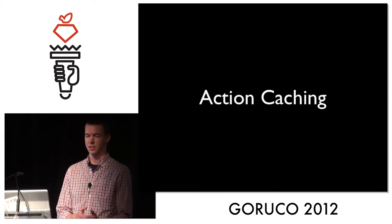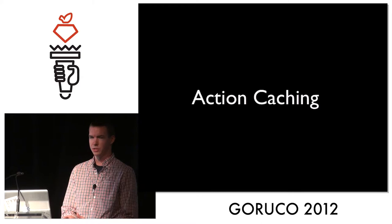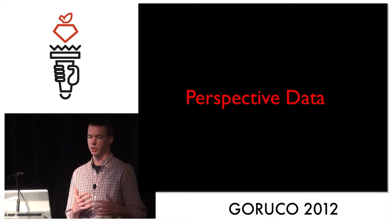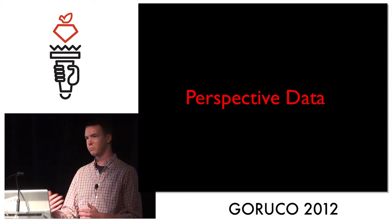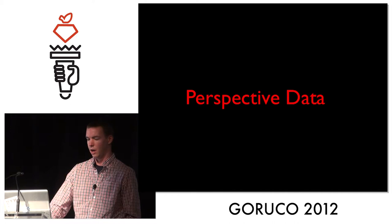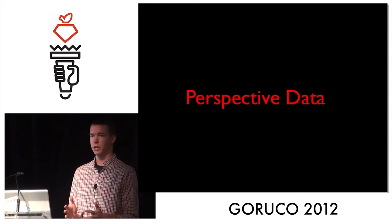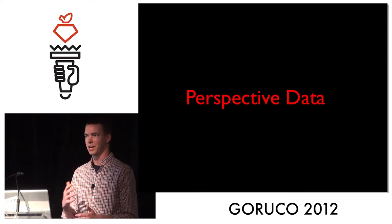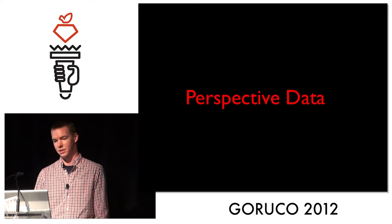Action caching is slightly better because it lets us handle authentication, but it has other problems. One is that it doesn't handle perspective data very well — perspective data is data that you can see that other people can't see, or you see a slightly different version. Say you're an administrator: you're going to see different data than a regular user. With action caching, the more perspective your pages are, the more different pages you have to cache — basically one page per user — which takes up a lot of space.